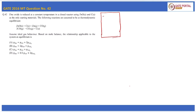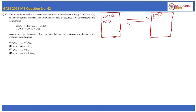Initially, there was only ZnO in solid form and carbon in solid form. As the reaction approaches equilibrium, there will be unreacted ZnO(s), unreacted C(s), and as products: CO(g), Zn(g), and CO₂(g). In order to know how many moles of each compound are present at equilibrium, we need to do the mole balance of these two reactions.